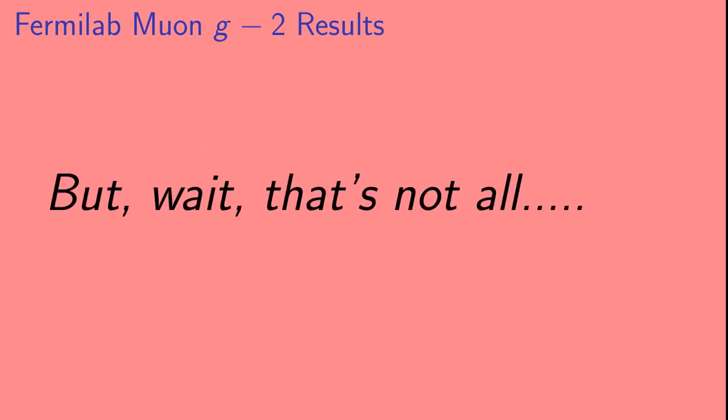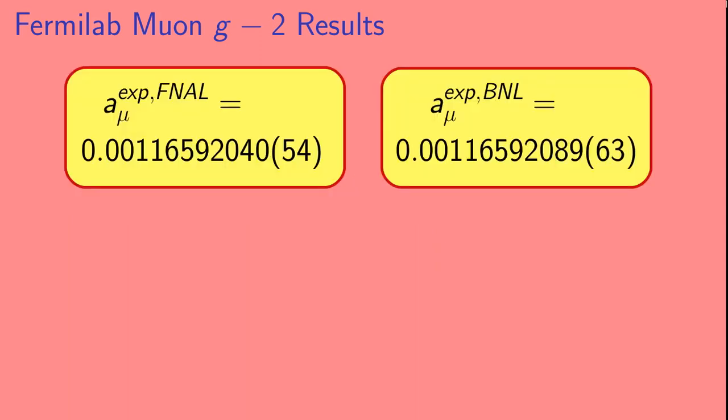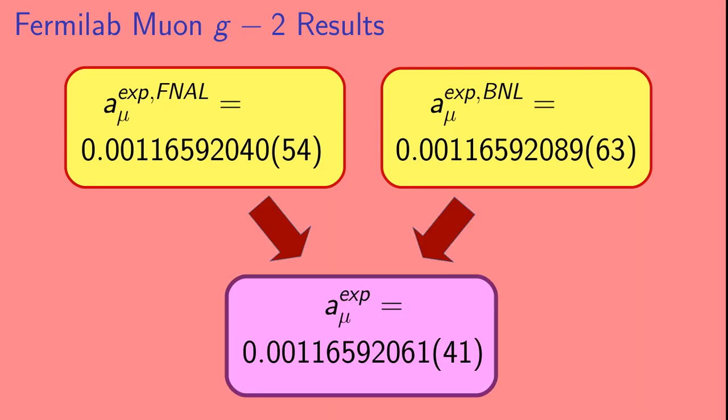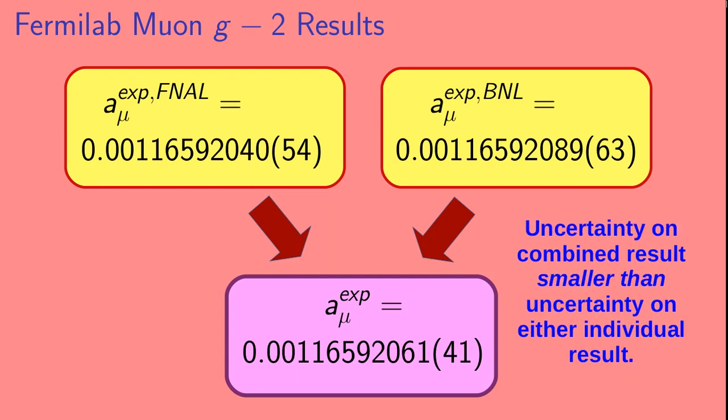But wait, that's not all! The Fermilab muon g-2 people also combined their result with the previous Brookhaven result. This combined value is intermediate between the values obtained by Fermilab and BNL. And the uncertainty on this combined result is smaller than the uncertainty on either individual result.